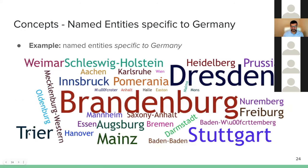Now comes the interesting part — some examples of the multifaceted information. For example, here are named entities very specific to Germany. You can see the model is learning very specific named entities for every region. Here is another example where you can see hyphenated words that are also adjectives in terms of part of speech tags, but also represent a semantic meaning — age. So one concept has three different properties to describe it, and the model is combining different dimensions of our linguistic knowledge to form these latent spaces.